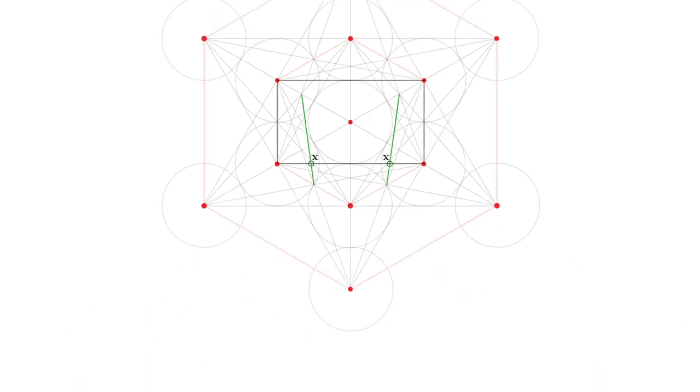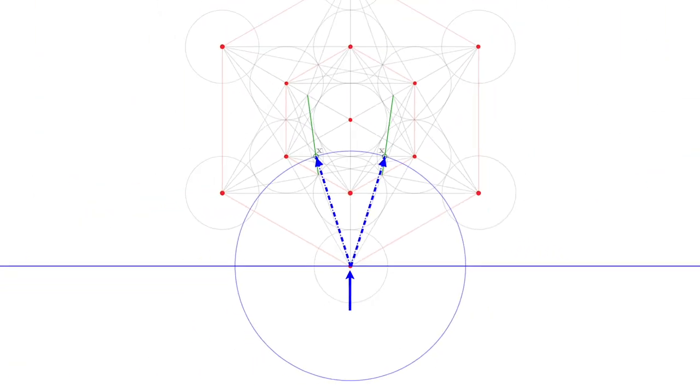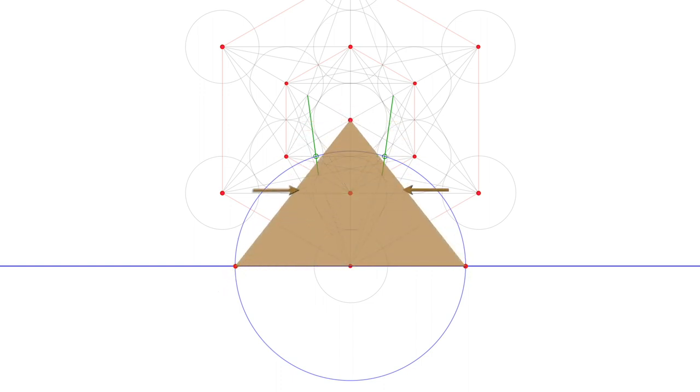At the baseline of Metatron's cube, we draw a circle whose radius is the distance from the base center to the two X points. We simply join the diameter baseline points to the very center of the construction and discover a perfect cross-section of the Great Pyramid, or G1, popularly named after Pharaoh Khufu.